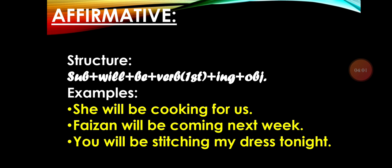Here are some examples: 'She will be cooking for us.' 'Faisal will be coming next week.' 'You will be stitching my dress tonight.' Notice that we are using this structure with a specific time reference — 'next week,' 'tonight' — denoting the future time when the action will take place.